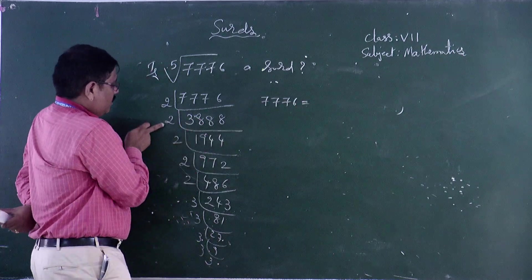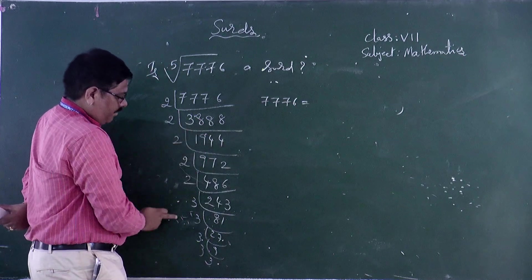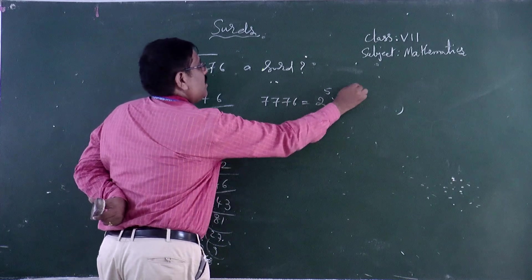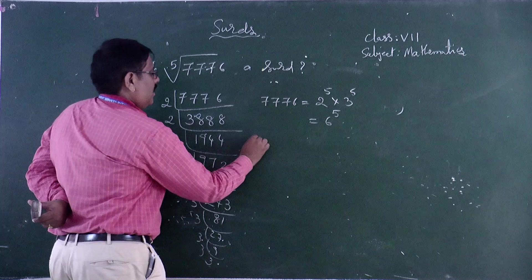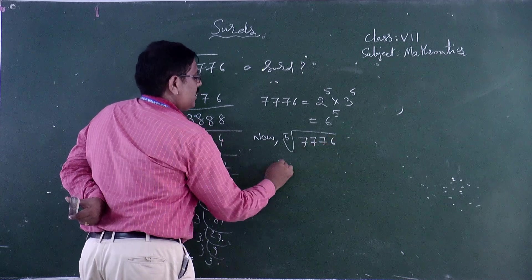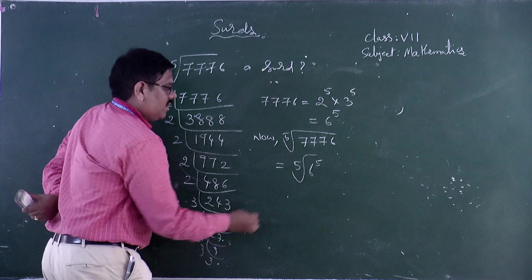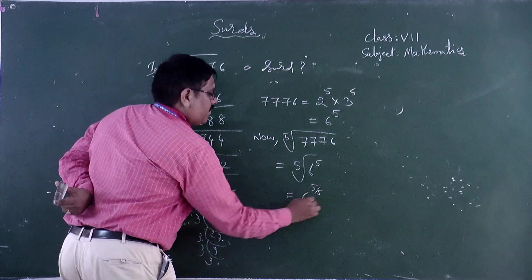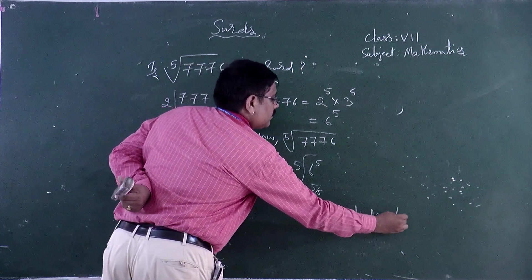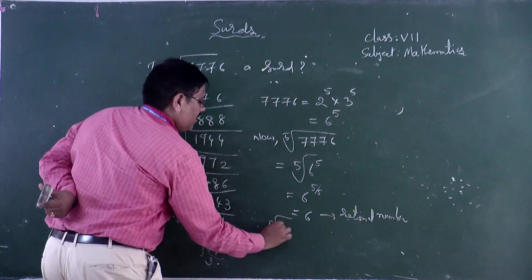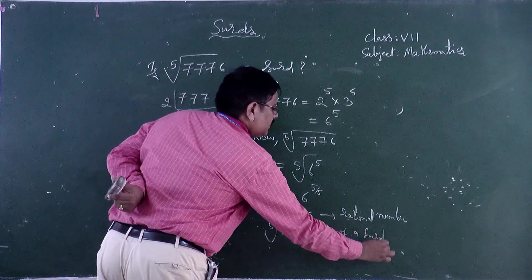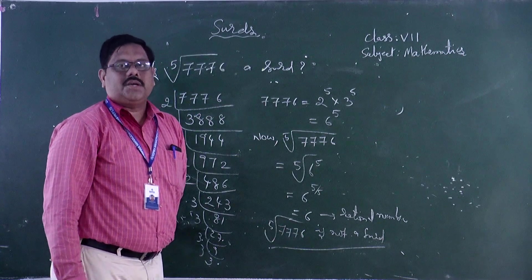7776 can be written as 2 × 2 × 2 × 2 × 2, that is 2 to the power of 5, multiplied by 3 × 3 × 3 × 3 × 3, that is 3 to the power of 5. So 7776 equals 2⁵ × 3⁵, which can be written as 6 to the power of 5. Now, fifth root of 7776 equals fifth root of 6 to the power of 5, which equals 6 — a rational number. Therefore, fifth root of 7776 is not a surd; it is a rational number. Thank you.